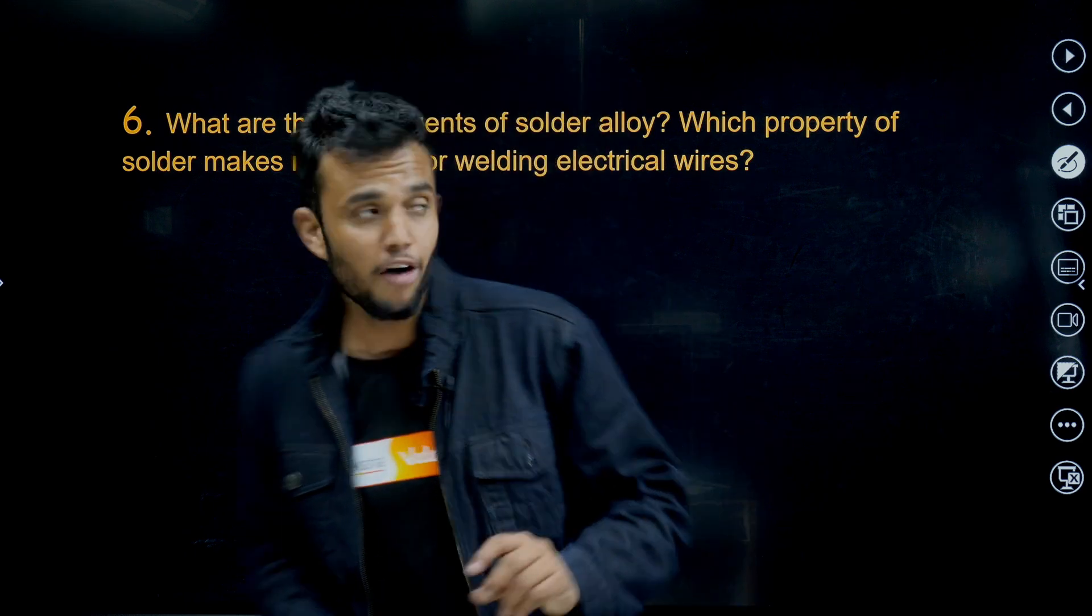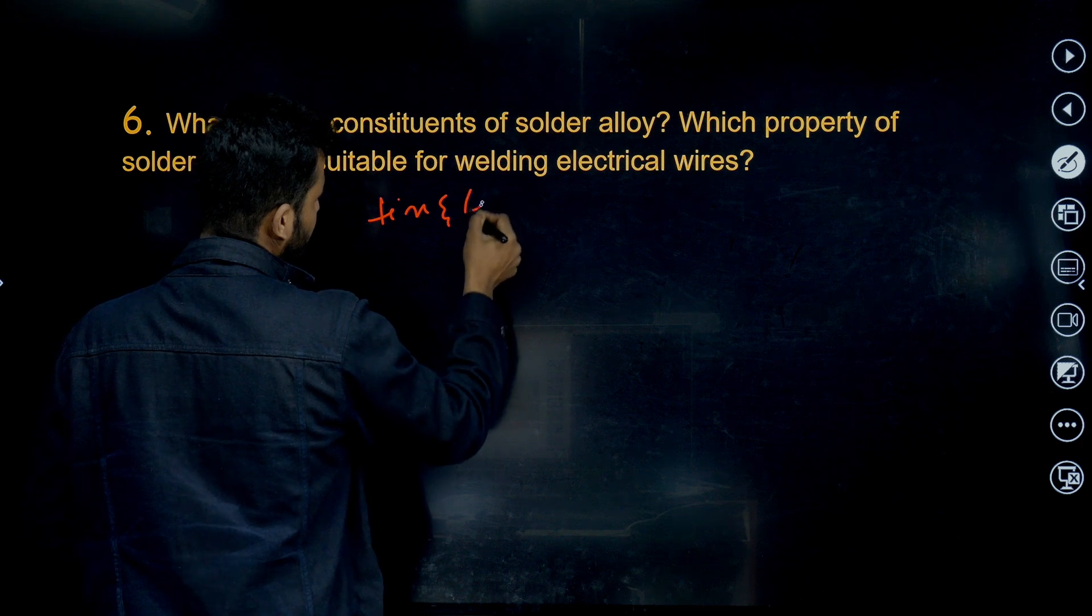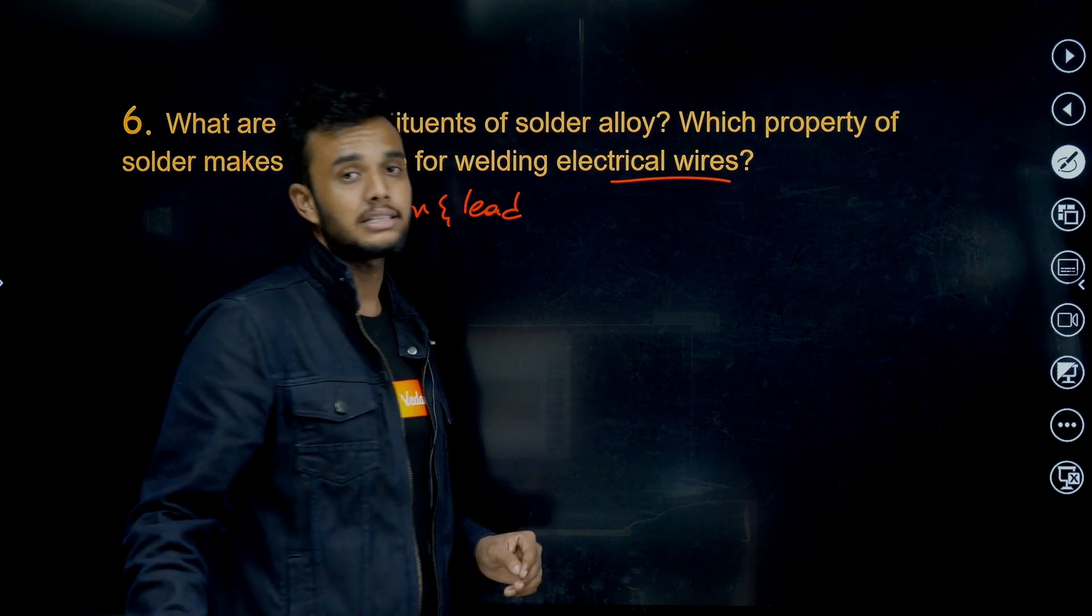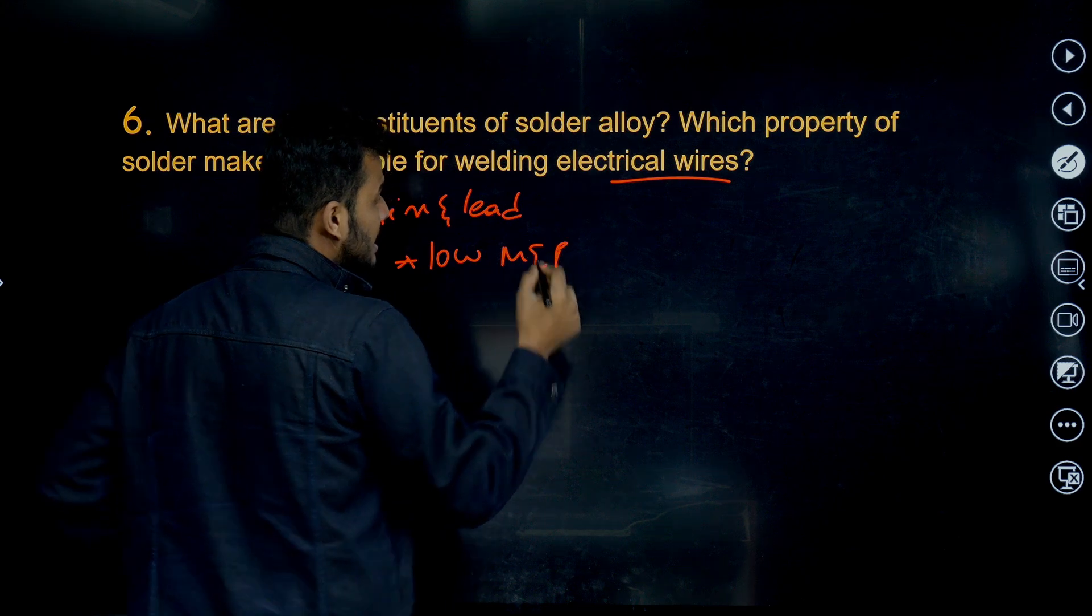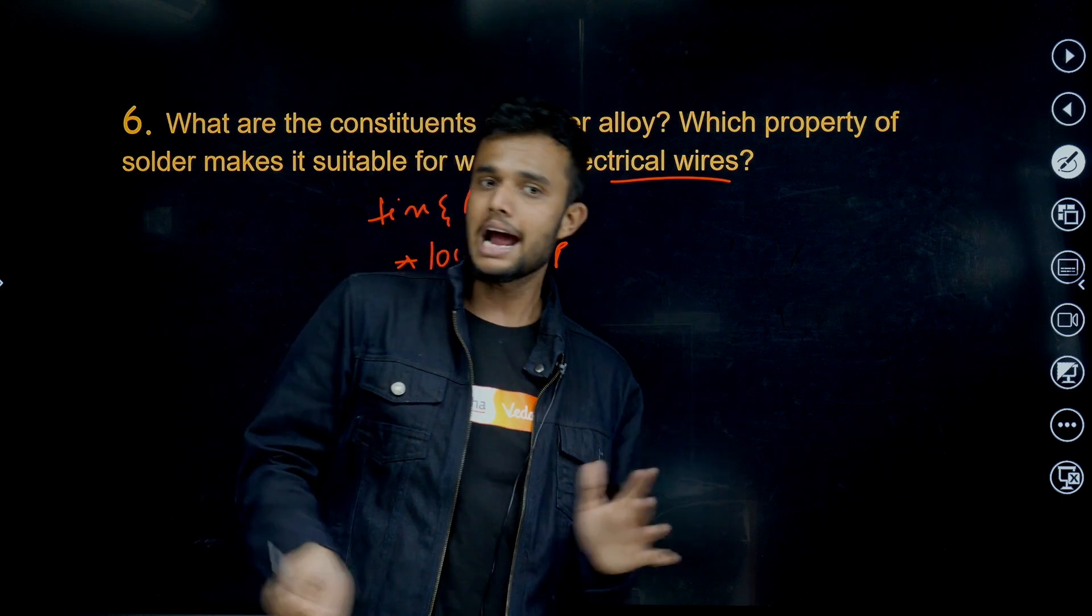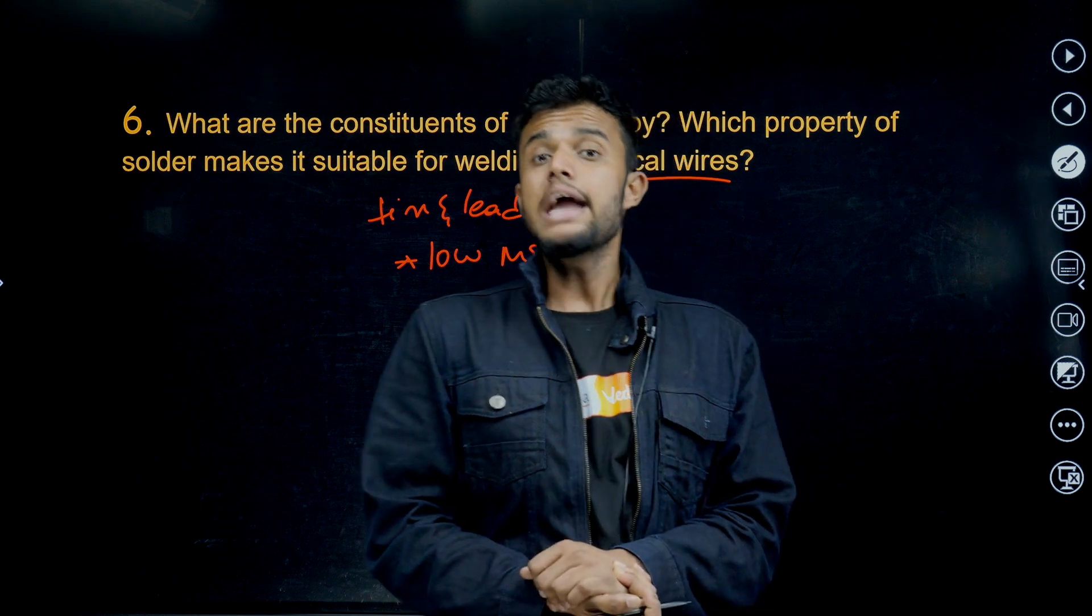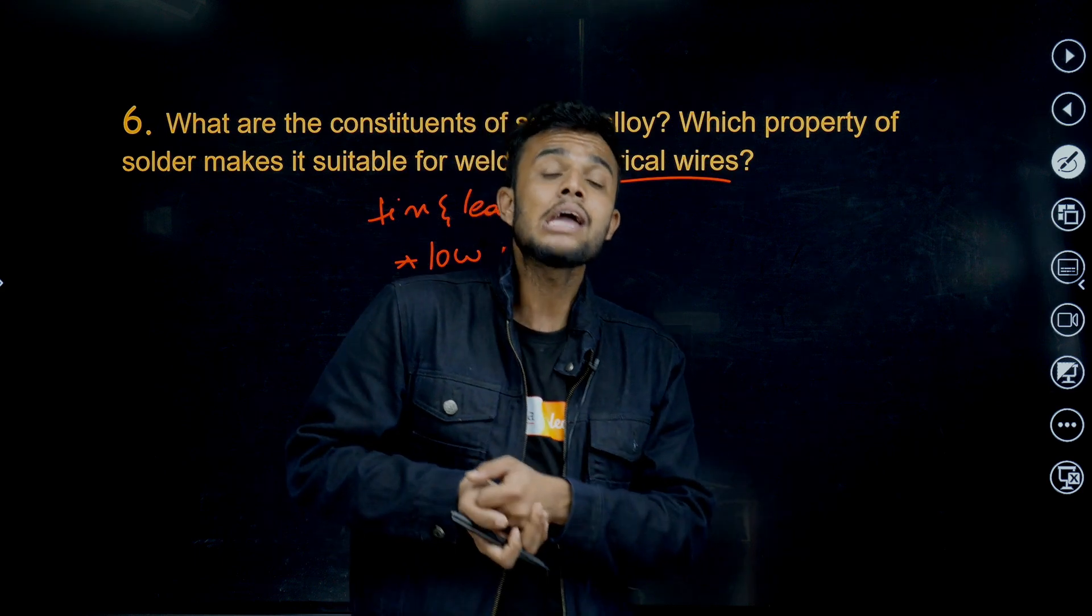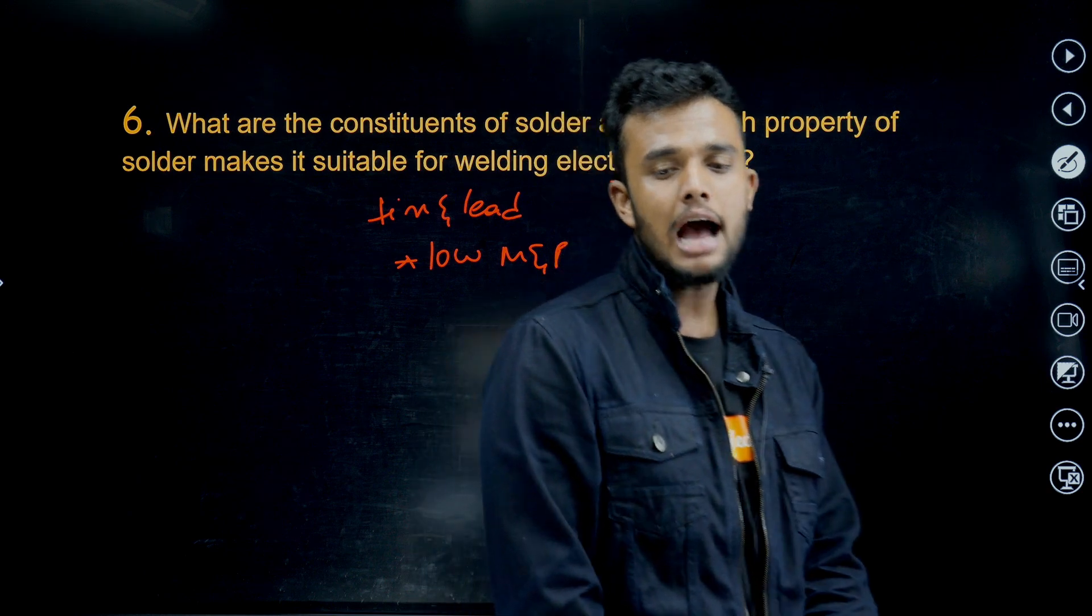Next question. What are the constituents of solder? Tin and lead. Which property of solder makes it suitable for welding electrical wires? It has a low melting point compared to original tin. It is an alloy. What are alloys? It is a mixture of metals and metals or metals and non-metals. And also in comment section I want one answer: give one example for metal and metal alloy, metal and non-metal alloy in the comment section.